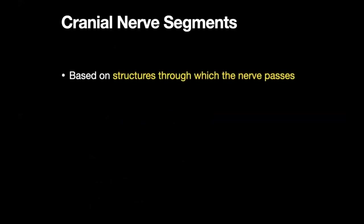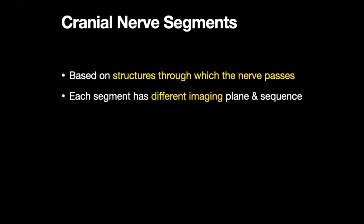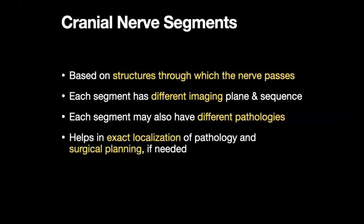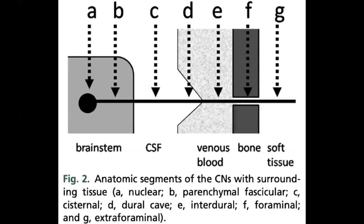Cranial nerve segments is an important concept to understand. The segments are based on the structures through which each cranial nerve passes. Each segment has a different imaging plane and is best seen on a different sequence. The pathologies affecting each segment can also be different based on the structures adjacent to that segment. Knowledge of the segments of the cranial nerve serves in exact localization of pathology and also in surgical planning.